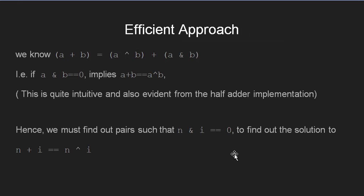One such effective method is available. See, we know that a plus b equals a caret b plus a and b. That is, if we want that n plus i should be equal to n caret i, we must go for n and i to be 0. Hence our problem reduces to finding values of i such that n and i equal to 0.